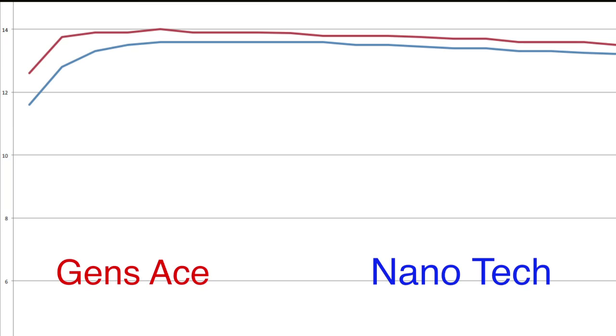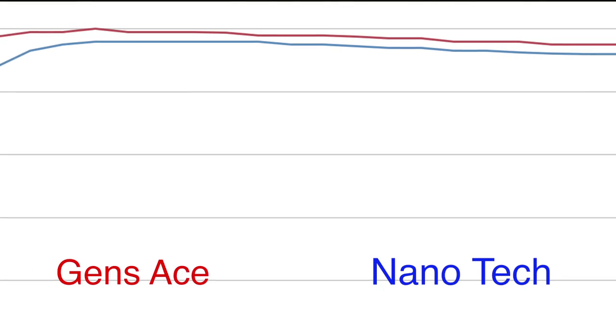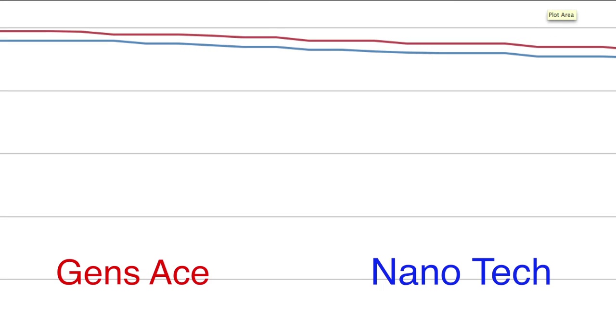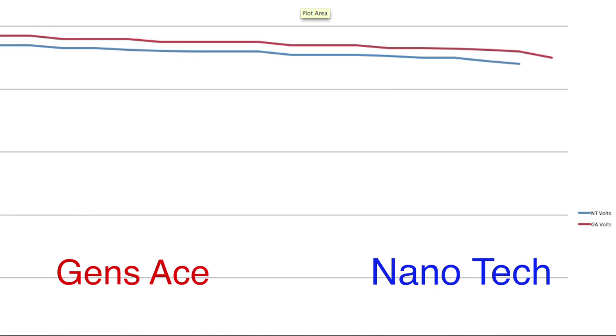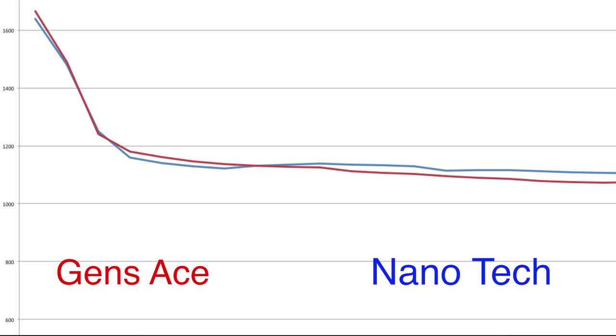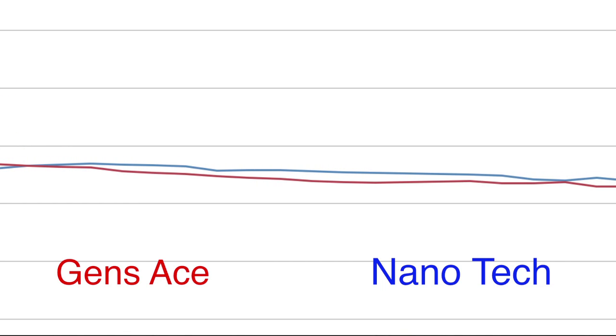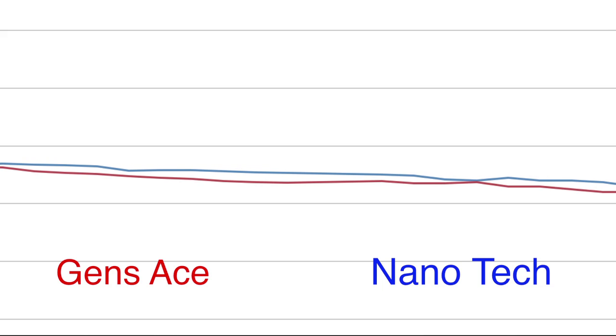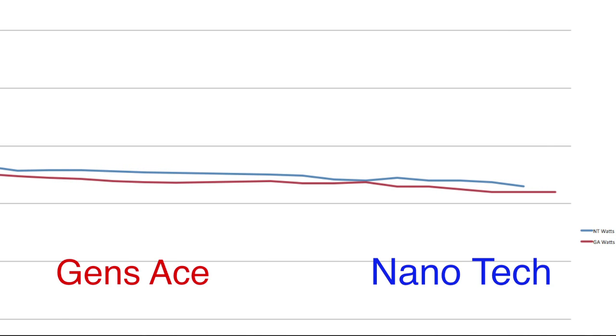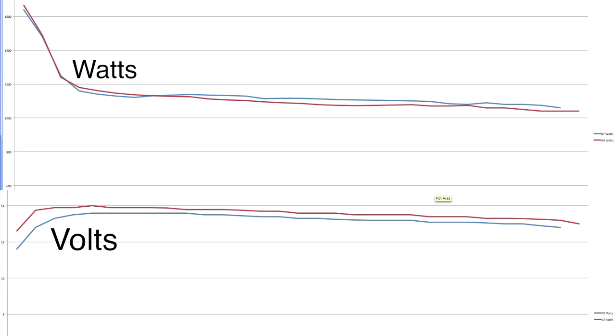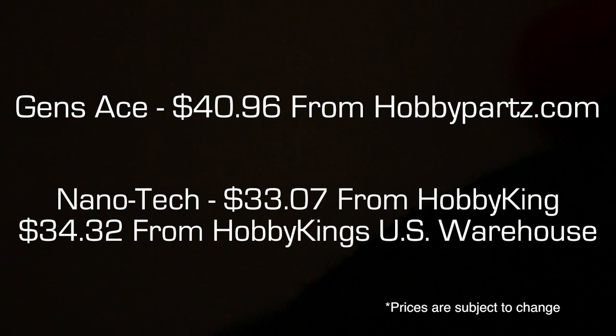This graph here is showing the voltage of the batteries and as you can see the Nanotech's voltage did sag just a fraction of a volt lower than the Gens, so the Gens did do a little bit better voltage wise. This graph is looking at the watts. As you can see the Nanotechs did provide more watts than the Gens, so that should give your plane more power. But as a result of that it did die a couple seconds shorter than the Gens, so it didn't last as long but it did provide more power. So to sum that up, if you want more performance from your plane and more power go with the Nanotech, and if you want a longer flight time go with the Gens Ace.